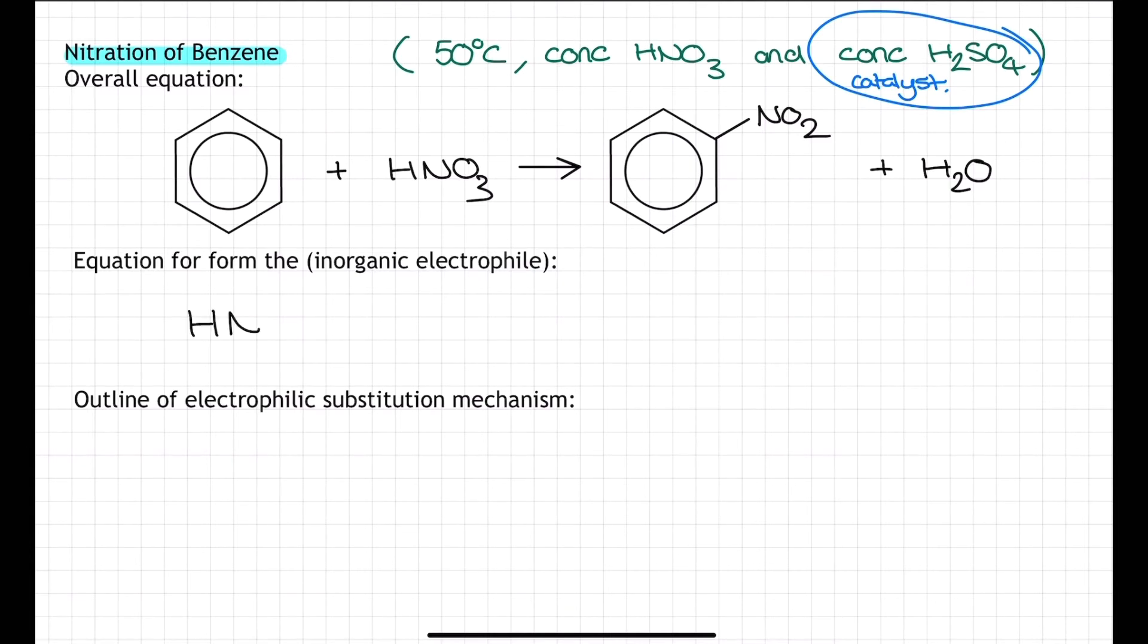Benzene is resistant to addition reactions. Instead, it undergoes substitution reactions. If benzene did undergo an addition reaction, then some of those delocalized electrons in the delocalized pi system would need to be used to form covalent bonds with incoming atoms or groups. By doing a substitution reaction, the benzene can maintain its delocalized pi system. Therefore, when we react benzene with an electrophile, we're going to use a cation, a fully positive charged electrophile, so that the benzene can undergo substitution and not lose that delocalized pi system.